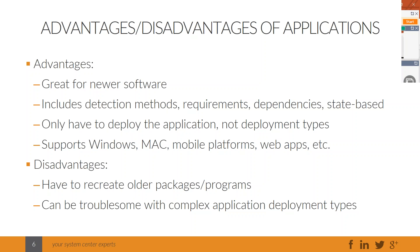With packages and programs, targeting is done via collections based on hardware inventory processed on the site server. With the application model, you have detection methods to see if software is already installed, and you add requirements to your deployment type — things like minimum memory, OS version, free disk space — all evaluated on the client, not the server. You can also have dependencies where one application requires another to be installed first. Applications are state-based, meaning Configuration Manager knows the current installation state.